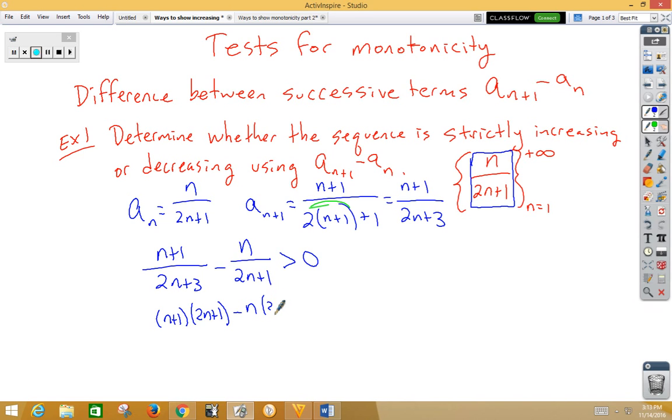The n is going to be multiplied by the 2n plus 3, giving us a common denominator of 2n plus 3 times 2n plus 1 greater than 0.